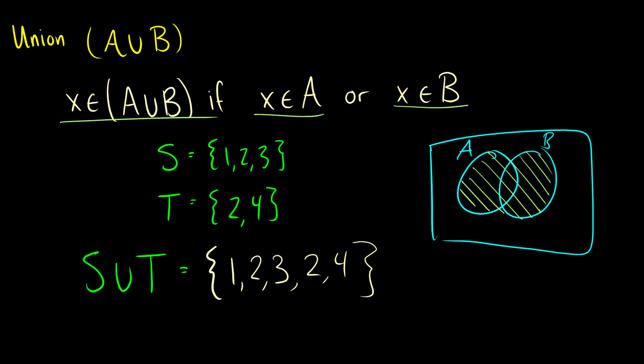So we can write that. We also, with sets, if we have the same element twice, we only write it once. So we don't need to write the 2 twice. So we know 2 is in S, so when we see it again in T, we don't need to worry about it when we use the union operator. It's redundant. So that's the union.